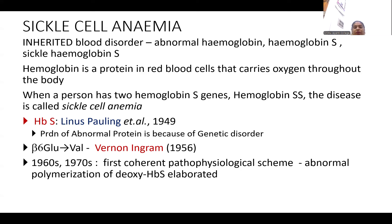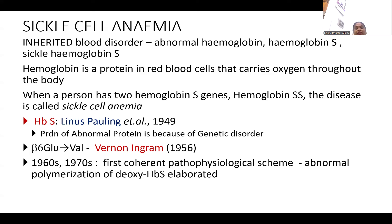This is mainly because of the production of an abnormal protein, which is caused by a mutation happening in the sixth amino acid of the beta polypeptide chain, where glutamic acid is replaced by valine. It was first reported by Vernon Ingram and Graham in the year 1956. The abnormal polymerization of deoxyhemoglobin sickle was elaborately explained by the year 1970.